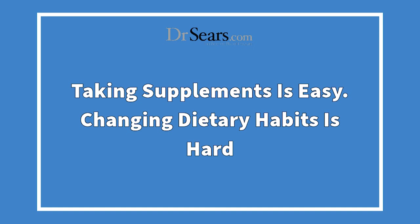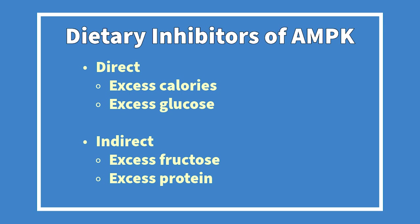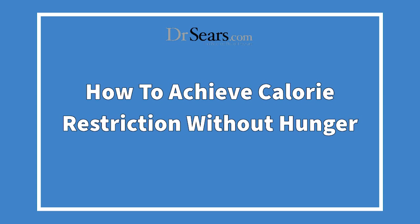Polyphenols and omega-3 fatty acids can be given as supplements — taking supplements is easy. But changing dietary habits is incredibly hard. And why is this important? Because it's dietary inhibitors of AMPK that are your primary enemy. There are indirect inhibitors like excess calories or excess glucose, and also excess fructose and excess protein. Any one of these, in excess, can inhibit AMPK and increase levels of insulin resistance. The big question is: how to achieve calorie restriction without hunger?